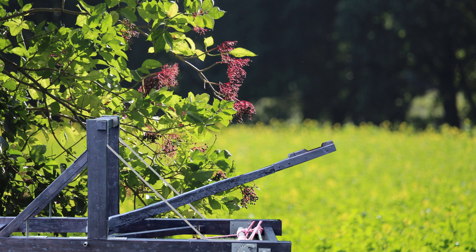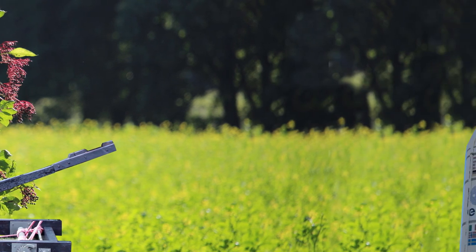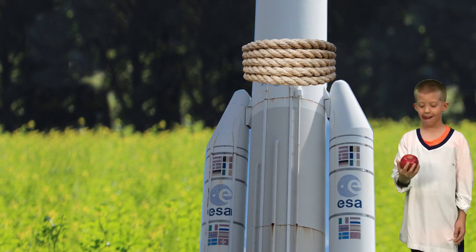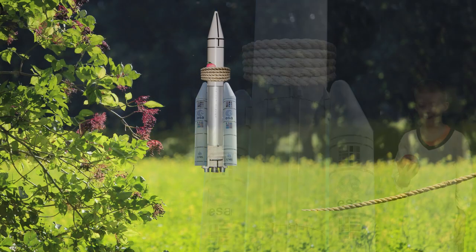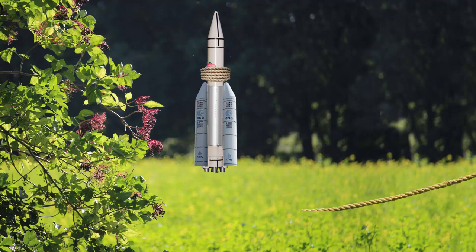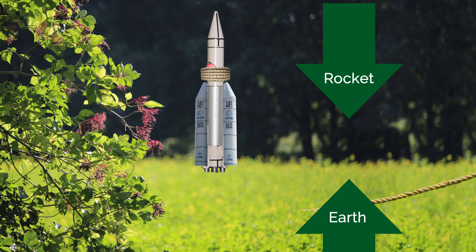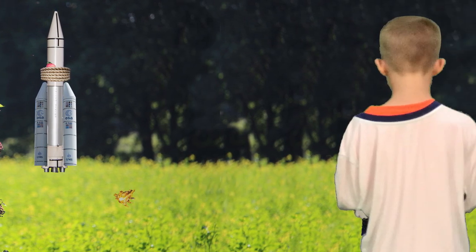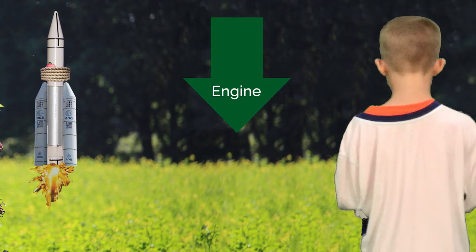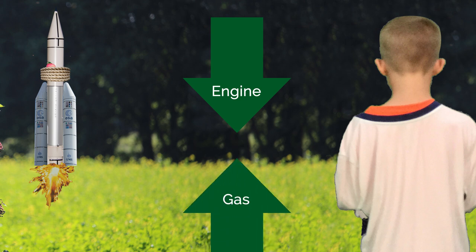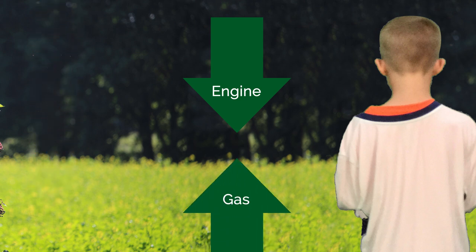Say your brother gets bored of simply throwing apples or launching them from a catapult. He decides to move on to the big stuff and decides to tie an apple to a rocket. As the rocket sits on the ground, the upward force of the earth balances the downward force of the rocket. But once your brother lights the engine, it pushes the gas down and out of the rocket, and the gas counters by pushing up and away from the rocket. This sends the rocket flying into outer space.